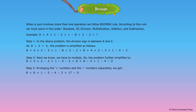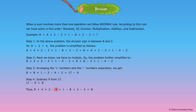Step 3: Arranging the plus numbers and the minus numbers separately, we get 8 plus 8 plus 1 minus 3 minus 4 minus 2, which is equal to 17 minus 9. Step 4: Subtract 9 from 17. 17 minus 9 is equal to 8. Thus, 8 plus 4 multiplied by 2 minus 3 plus 1 minus 8 divided by 2 minus 2 is equal to 8.